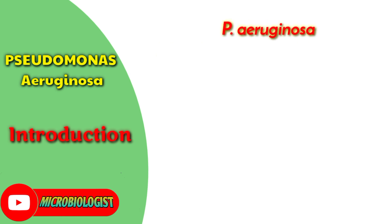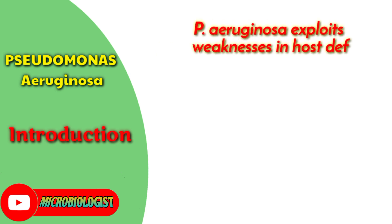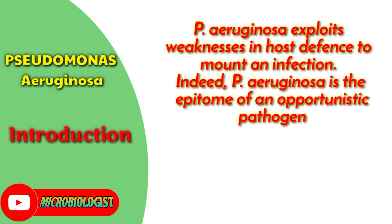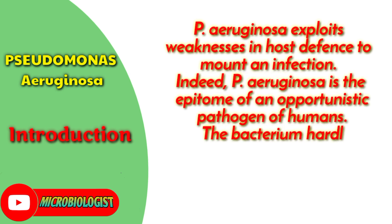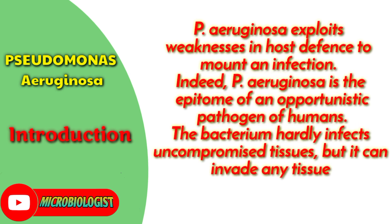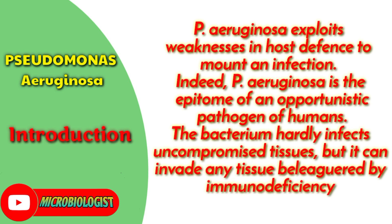P. aeruginosa exploits weaknesses in host defense to mount an infection. Indeed, P. aeruginosa is the epitome of an opportunistic pathogen of humans. The bacterium hardly infects uncompromised tissues, but it can invade any tissue beleaguered by immunodeficiency.